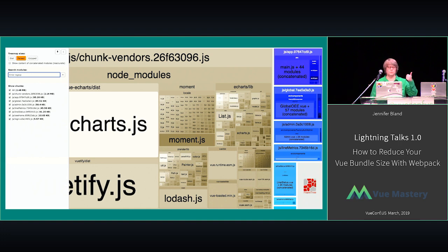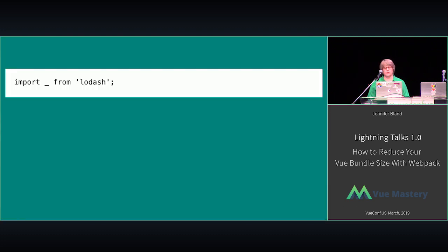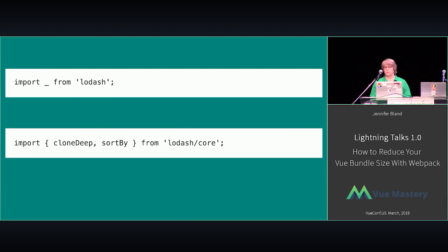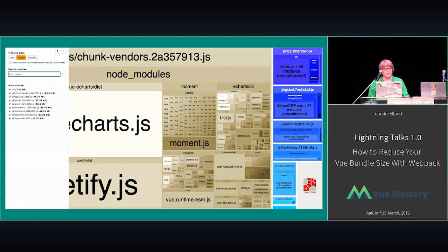My biggest culprits are Vue, eCharts, Vuetify, Moment, and Lodash. The first thing I did was reduce the size of Lodash. By default, I was importing the entire Lodash library, but when I looked at the five apps, we were actually only using two different methods from Lodash. So I changed it to import just those two methods, ran my build again, and now my application is down from 2.48 megabytes to 2.42 megabytes.